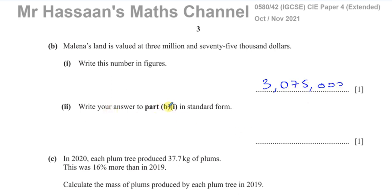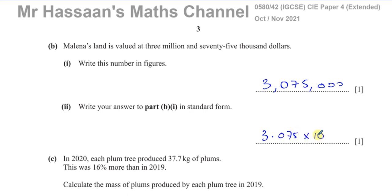Write your answer to part one in standard form. Standard form should have one digit before the decimal point, then a decimal point, and any non-zero numbers after it until the last non-zero digit. So you're going to have 3.075 multiplied by 10 to the power of — the decimal point was moved 6 places — so 10 to the power of 6.